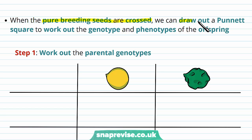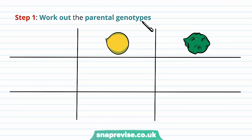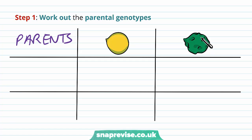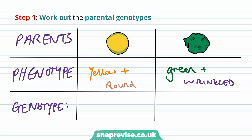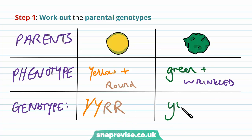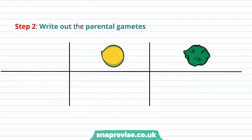When these pure-breeding seeds are crossed, we draw a Punnett square to work out the genotypes and phenotypes of the offspring. Step one is to work out the phenotypes of the parents: purebred yellow and round, and purebred wrinkled and green. From this we work out the genotypes — since they're purebred, yellow and round has two dominant alleles: YYRR, and the green and wrinkled one has two recessive alleles: yyrr.